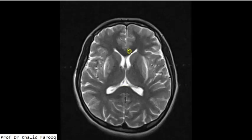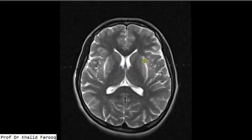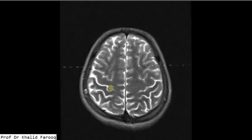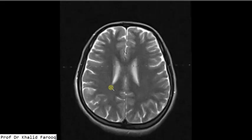Here we can see the midbrain, lateral and third ventricles, thalamus, and head of the caudate nucleus. Abnormal signals are noted in the basal ganglia on either side — that is, the globus pallidus and putamen — and both are almost symmetrical.